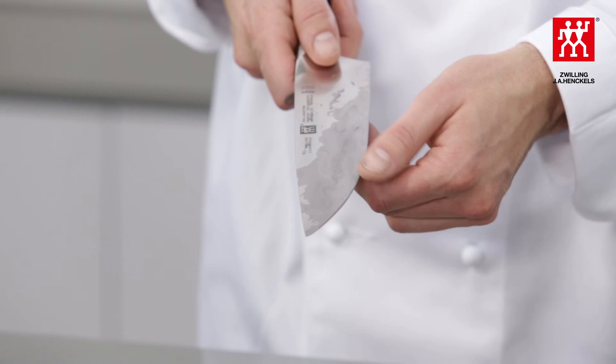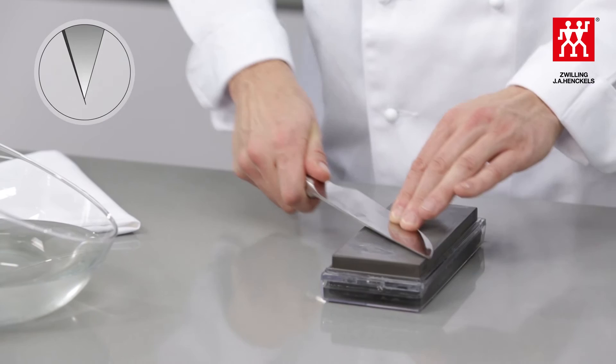Then sharpen your knife blade in the same way on the fine-grained side of the stone. You will usually feel a slight burr on this side as well.